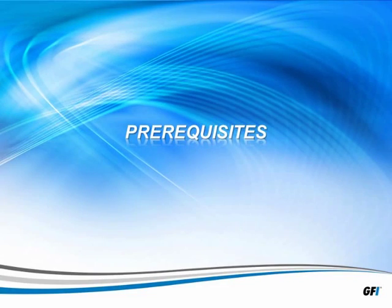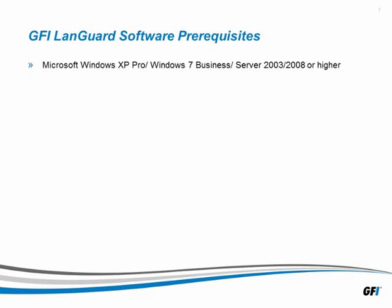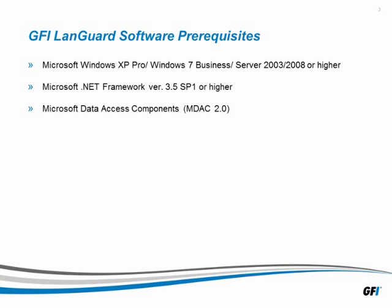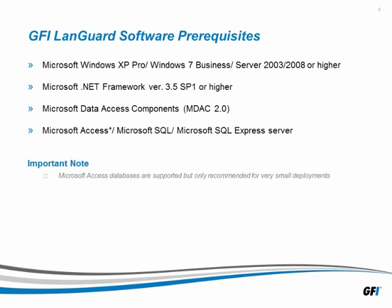After determining the proper server resources are met and you are ready to install GFI LandGuard, be sure to have the following software prerequisites met as well: Microsoft Windows XP Professional, Windows 7 Business, or Microsoft Windows Servers 2003, 2008 or higher. Microsoft .NET Framework version 3.5 Service Pack 1 or higher should be installed. Microsoft Data Access Components, or MDAC 2.0, is also required. Since GFI LandGuard stores information to a database, Microsoft SQL Express or Microsoft SQL Server is needed. Microsoft Access databases are supported as well, but only recommended for very small deployments.